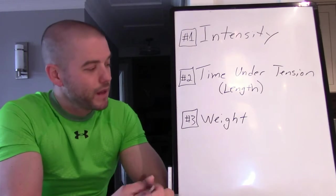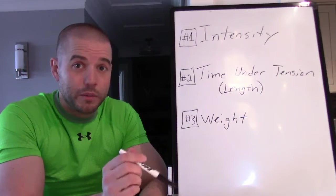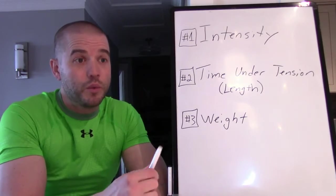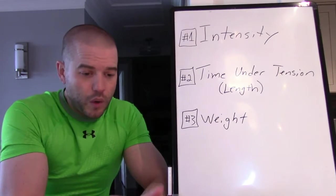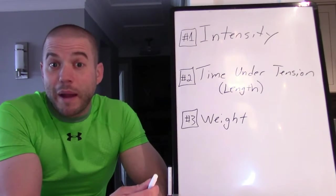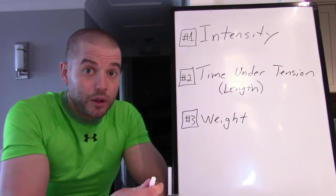But a third one that you're able to do for progressive overload is increasing your weight. So maybe I went from five-pound dumbbells to ten-pound dumbbells, upping different weight that I have across my different exercises that I'm doing.